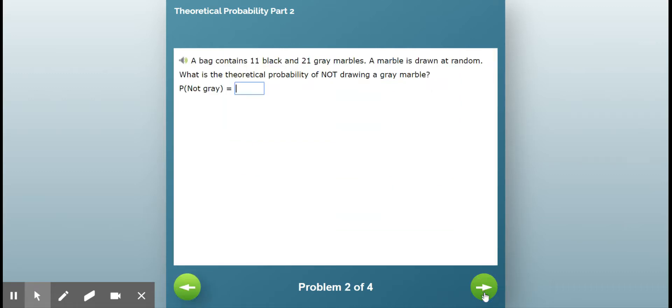So let's try again. A bag contains 11 black and 21 gray marbles. A marble is drawn at random. What is the theoretical probability of not drawing a gray marble? The probability that it is not gray.